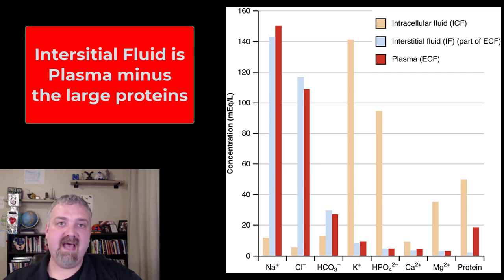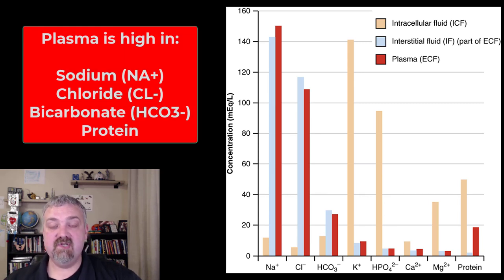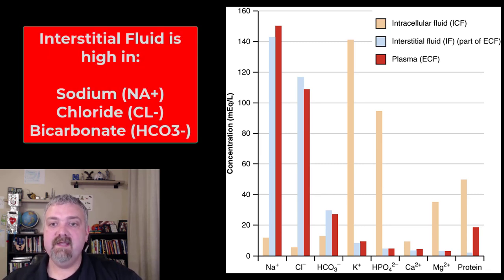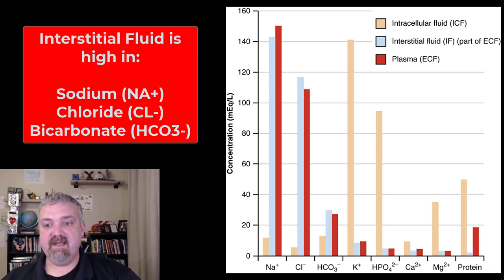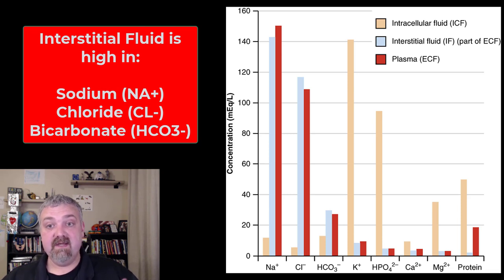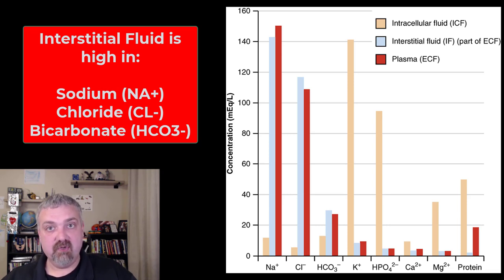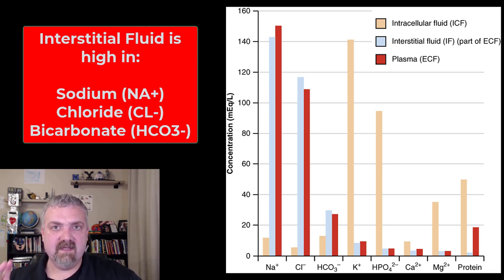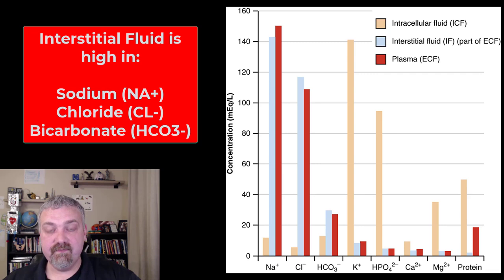The first thing I notice when I look at this image is that plasma and interstitial fluid are very similar. Plasma is going to be high in sodium, chloride, bicarbonate, and then protein. Those are going to be key ingredients in your blood plasma. Then if you look at the interstitial fluid, you're going to see sodium, chloride, and bicarbonate, but not protein. When fluid is filtered out of your capillaries, the filters in your capillary beds do not capture sodium, chloride, and bicarbonate, but they do capture proteins because they're large. So proteins stay in the plasma — that's the key difference between blood plasma and interstitial fluid.